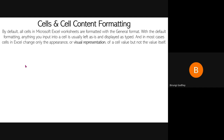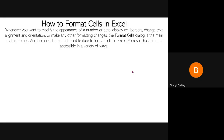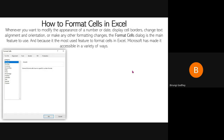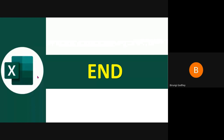All cells have a default format of General, so whichever data type you punch into a cell it will be taken in and displayed as is. Whenever you want to modify the appearance of a number or a date, or just changing borders, adding cell borders, changing text alignment or orientation — all of that is part of formatting. How you format your worksheet will really tell whether you're a professional user or just a beginner.